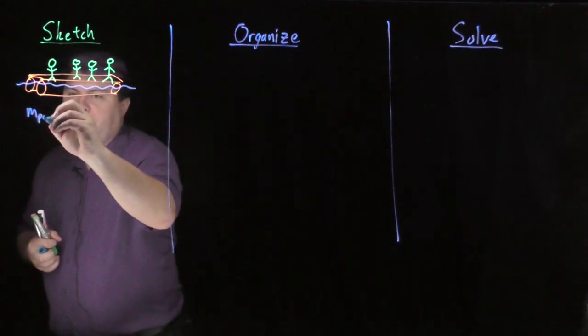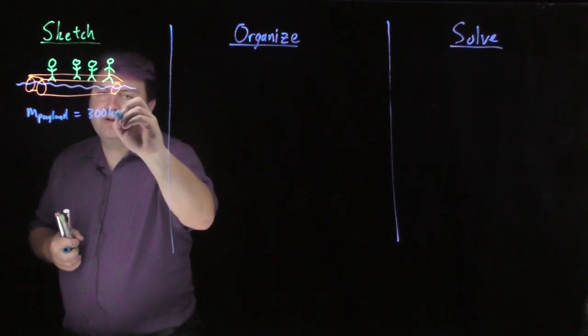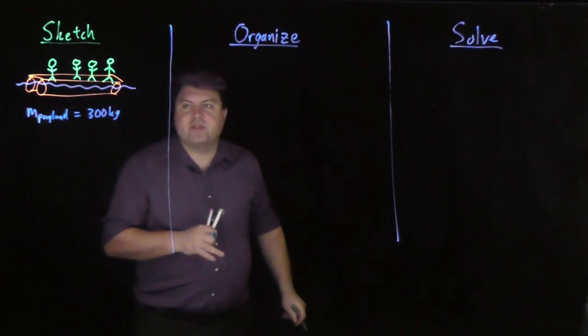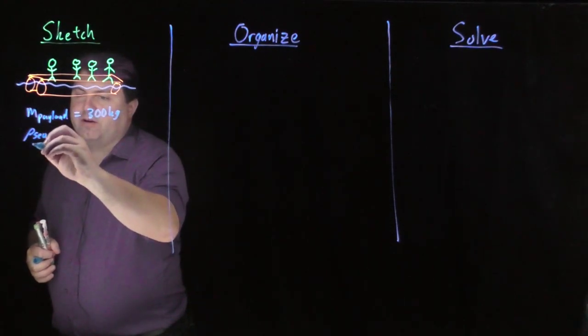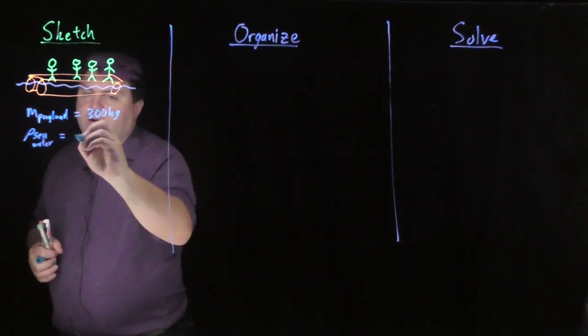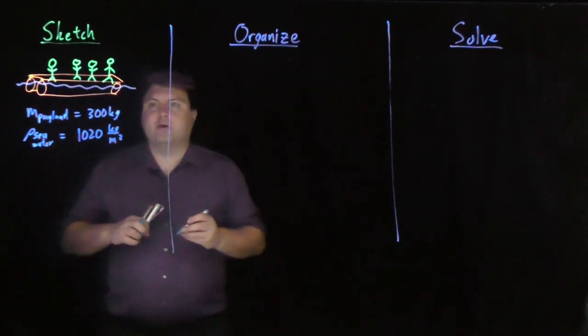So we have the mass of the payload we're gonna say is 300 kilograms, and this was in the ocean, so the density of seawater was 1020 kilograms per meter cubed.